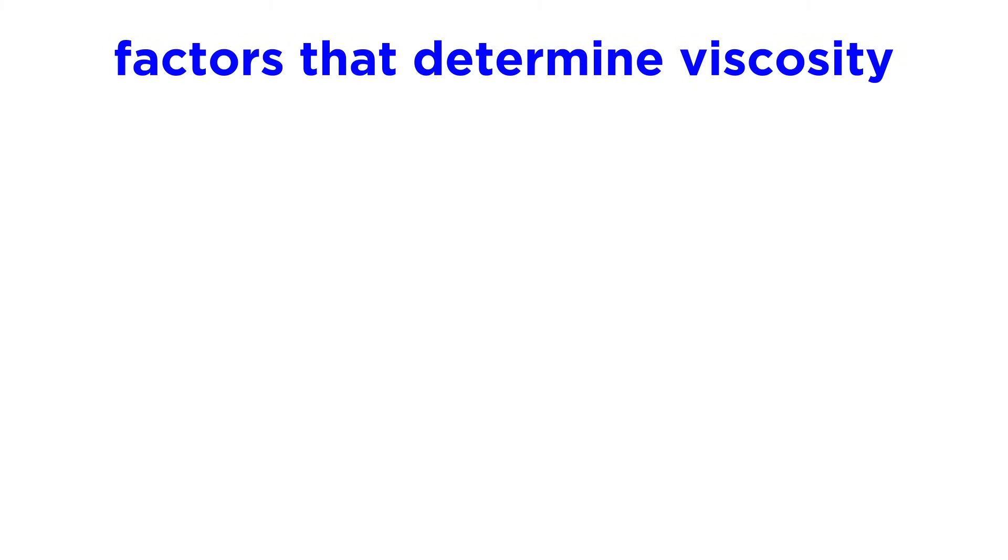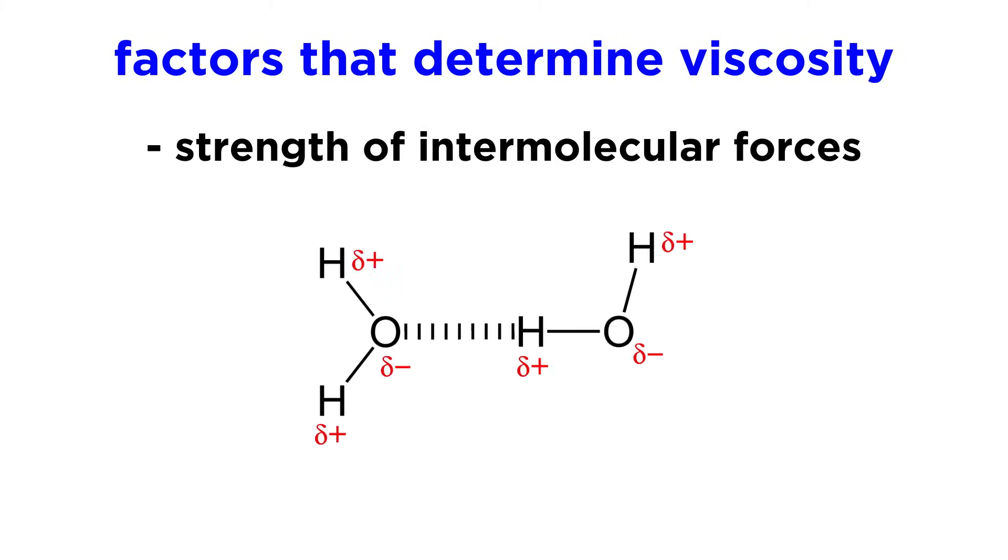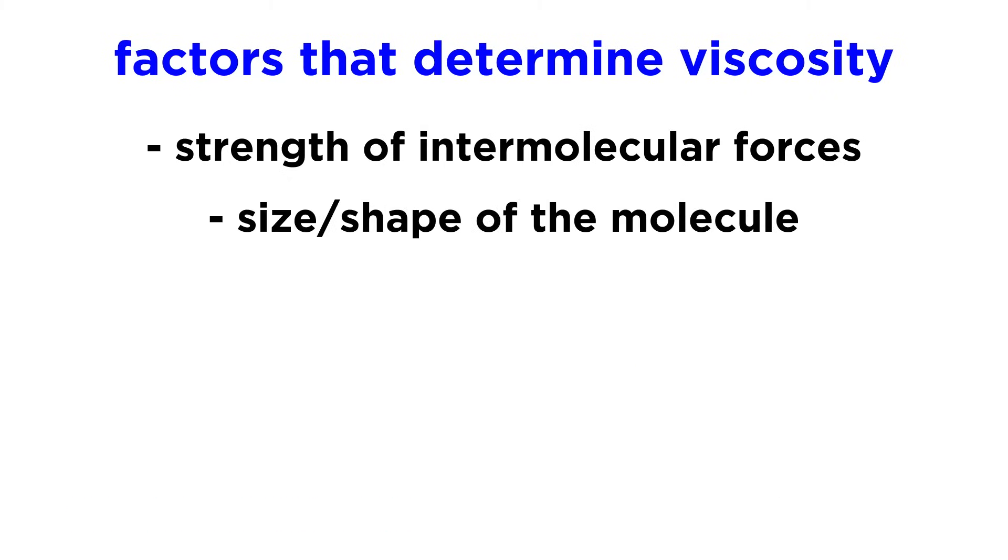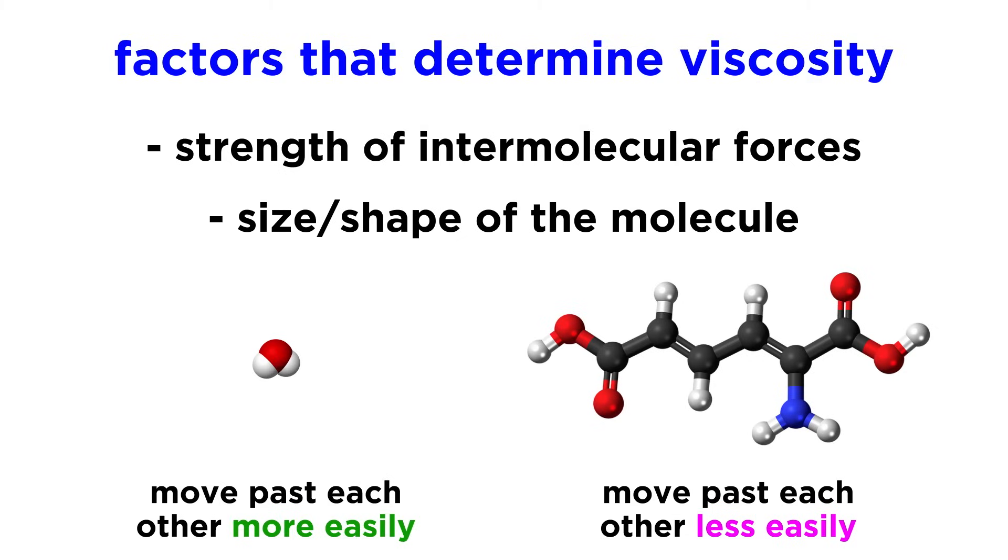There are a number of factors that dictate the viscosity of a liquid. First, we must look at the intermolecular forces occurring between the molecules. The greater the attraction between the molecules, the stickier and more viscous the liquid will be. The size and shape of the molecules also play a part. A liquid with very tiny molecules will be less viscous because of enhanced mobility. Very large molecules will have a more difficult time moving past one another, which will restrict flow and result in a greater viscosity.